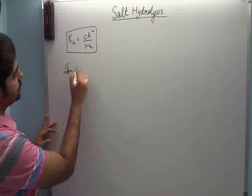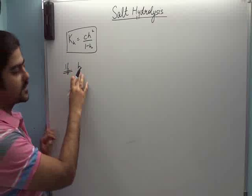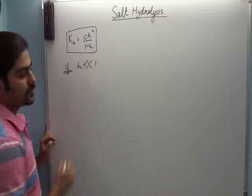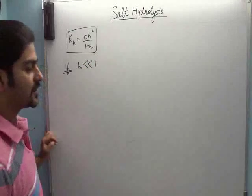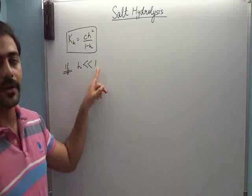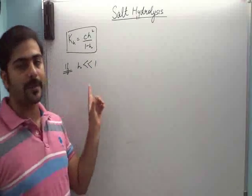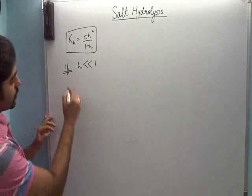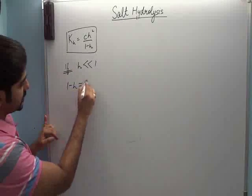If I assume that degree of hydrolysis H is quite less than 1. Quite less than 1 ka matlab hai 10% se kam. To 1 ka 10% is 0.1. To agar H ki value 0.1 se kam hai, to aap is approximation use kar sakti ho. To aap 1 minus H ko approximately 1 likh sakte hain.